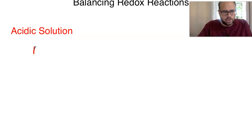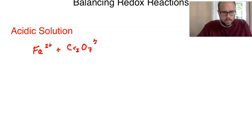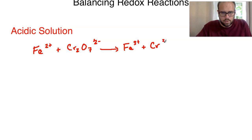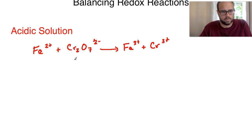Let's start with the reaction itself. We're going to have iron two plus and the chromate ion, Cr₂O₇²⁻, and that is going to yield iron three plus and chromium three plus. This is not balanced — you can see that from the chromium atoms. You've got two on the left and one on the right.